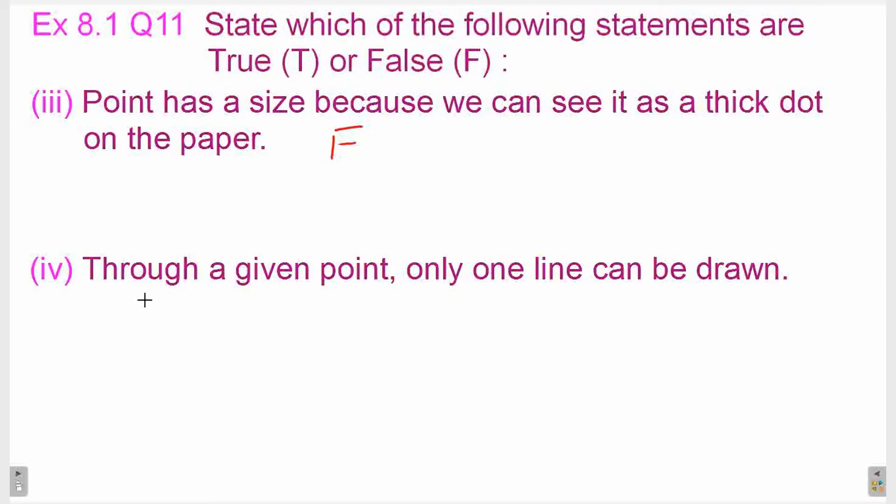Next statement: through a given point, only one line can be drawn. Now, this statement is false again. Because through a point, we can draw infinite number of lines. If we have a point, then through that point, we can draw many such lines. Therefore, this statement is false.